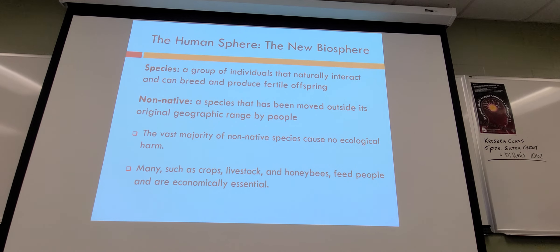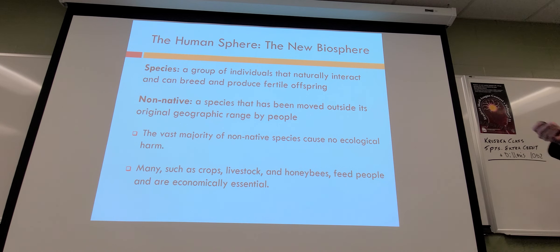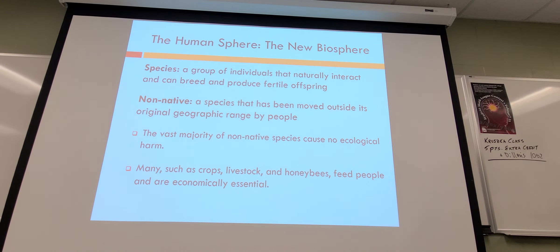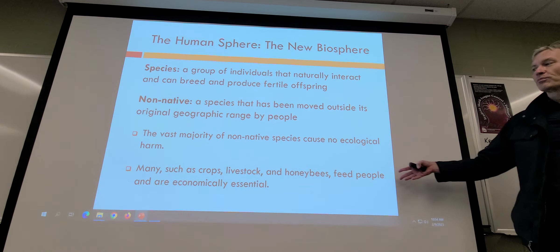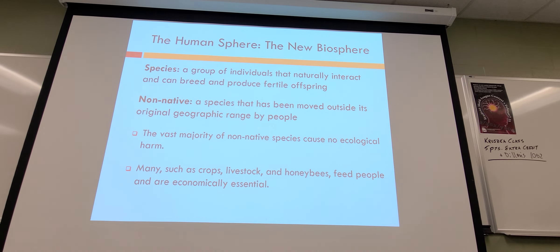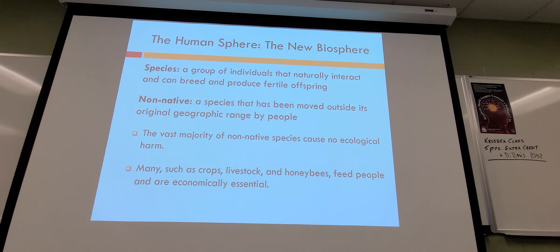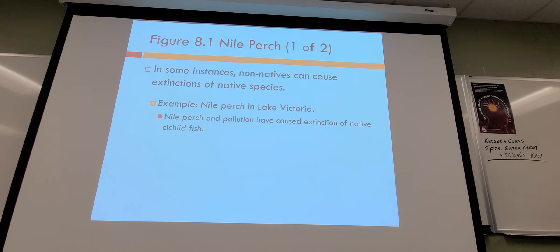Some terms to start: a species is a group of individuals that naturally interact, can breed, and produce fertile offspring. Non-native, otherwise known as invasive species — well, it depends on the species specifically. There are lots of non-native species that don't necessarily do bad things to the ecosystem they're introduced to, and there are species we've introduced for our own purposes that we don't consider invasive because they're where we want them as humans.